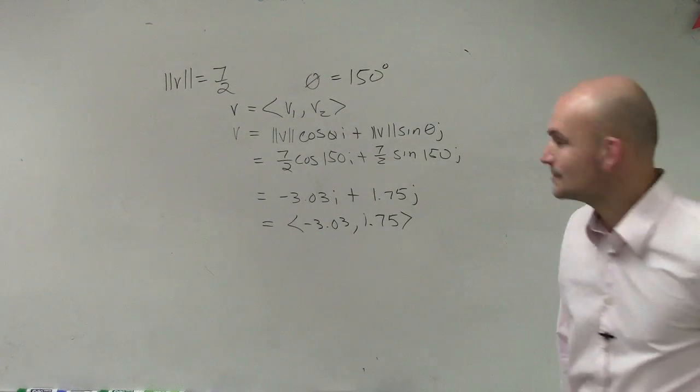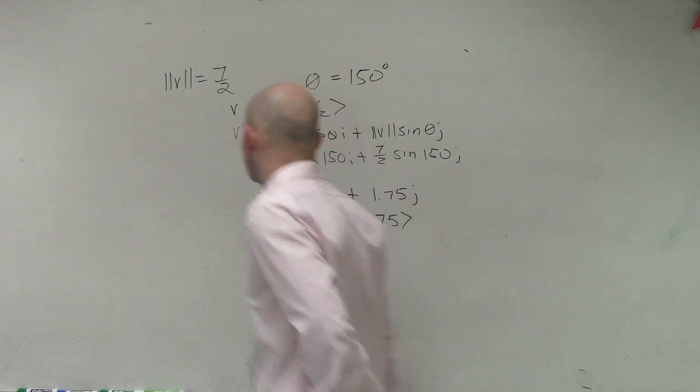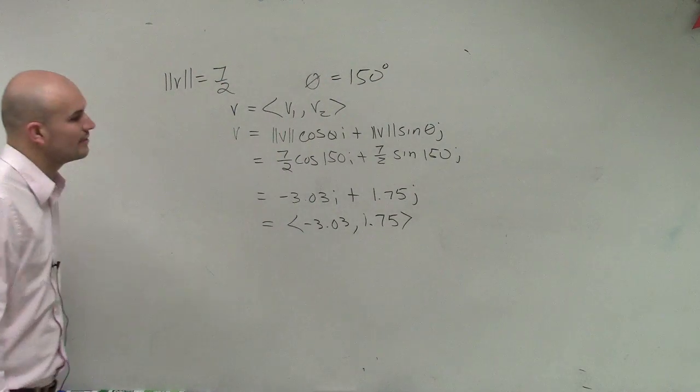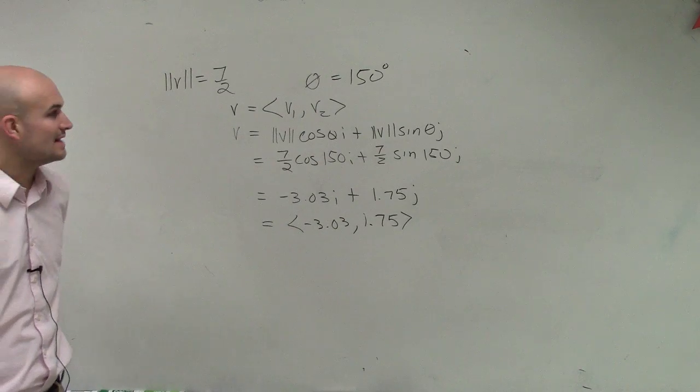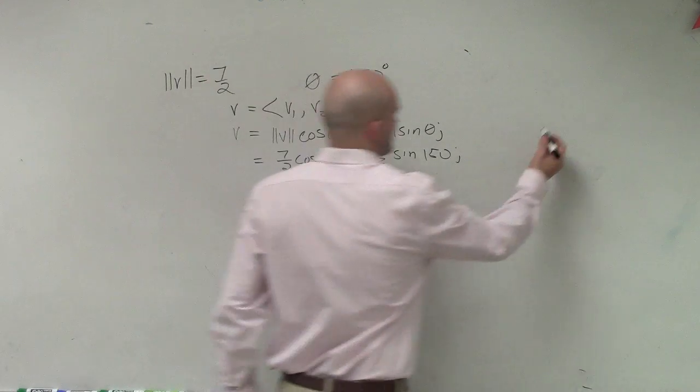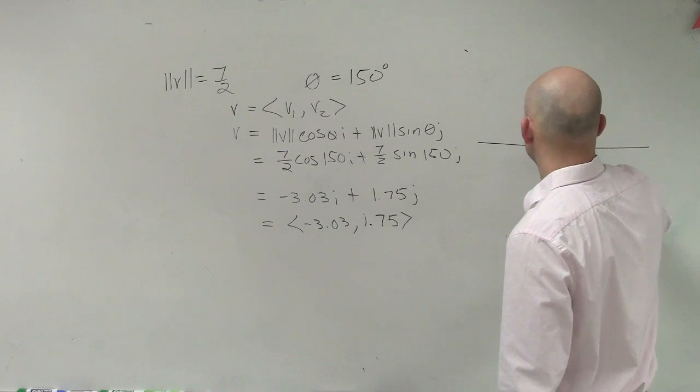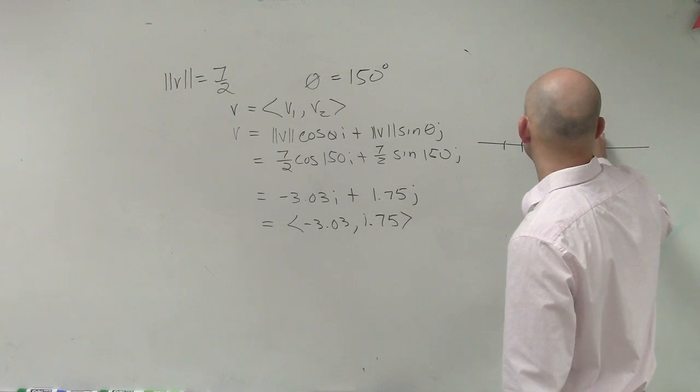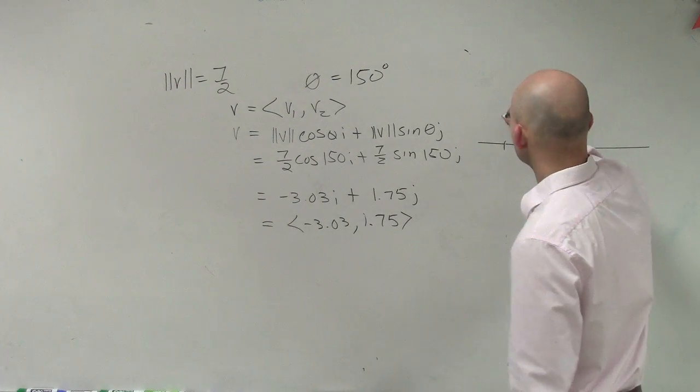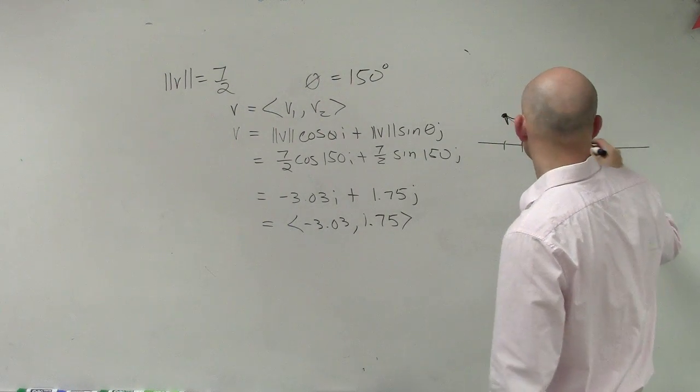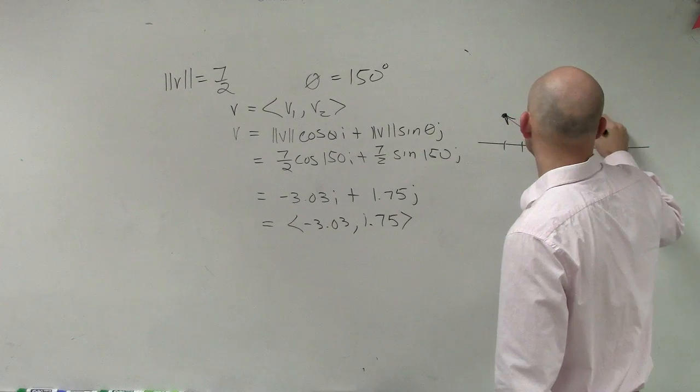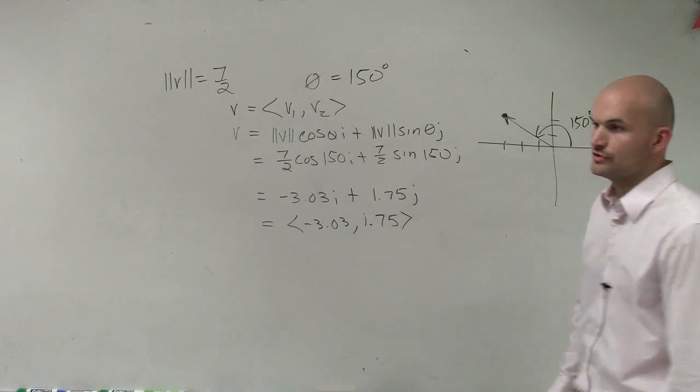And then what you can simply do is then the angle, so you can see that's your coordinate point, and then your angle is 150 degrees of your new vector.